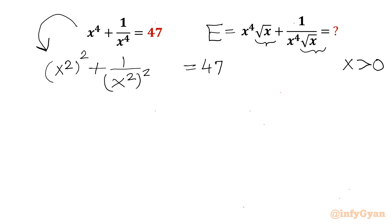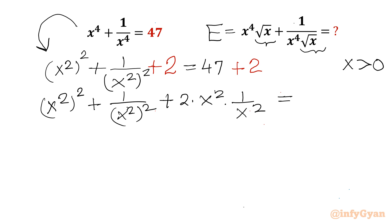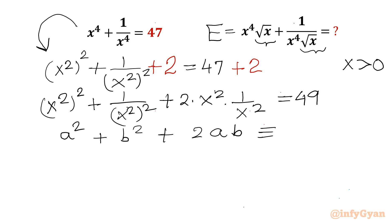Now I will add 2 to both sides — plus 2 on both sides. The left hand side gives us the identity (x²)² plus (1/x²)² plus 2 times x² times 1/x², and the right hand side is 49. You can see this is a² + b² + 2ab, which is the algebraic identity (a + b)².